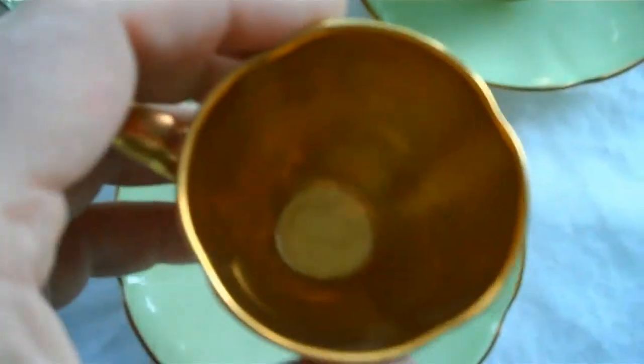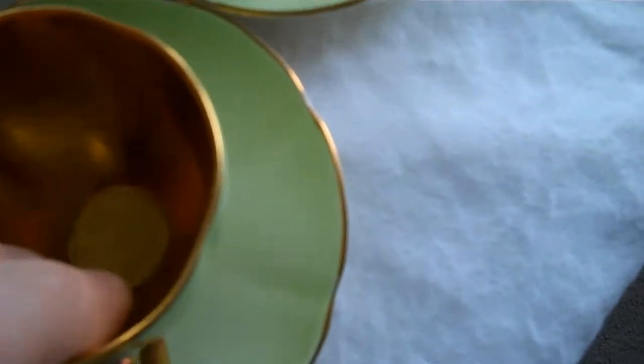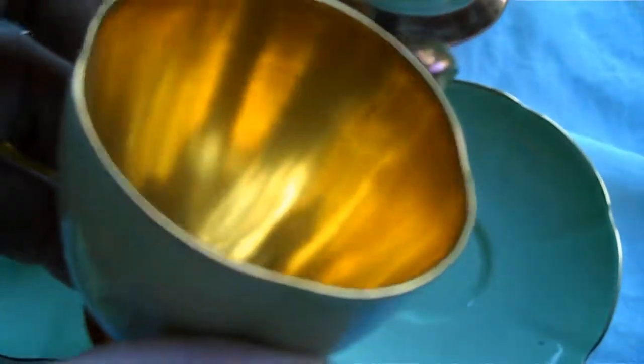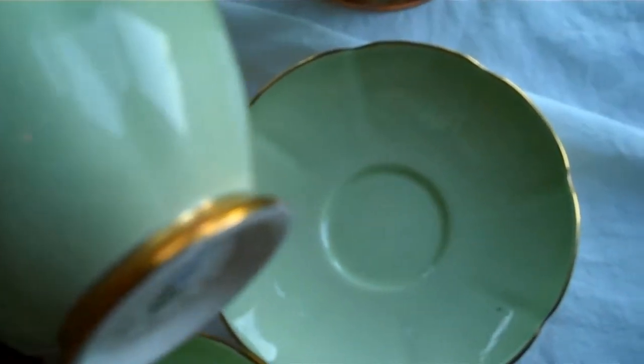So we're on to the fourth cup now. Again, we can see that the interior is in excellent condition. There's nothing really wrong with this. I'm just checking the crazing and not seeing very much on this particular one. The same seems to be true in this case of the saucer. The gilding is basically in excellent condition. There's a little bit of dust inside the fifth one, but the condition remains the same. There's crazing to the cup.